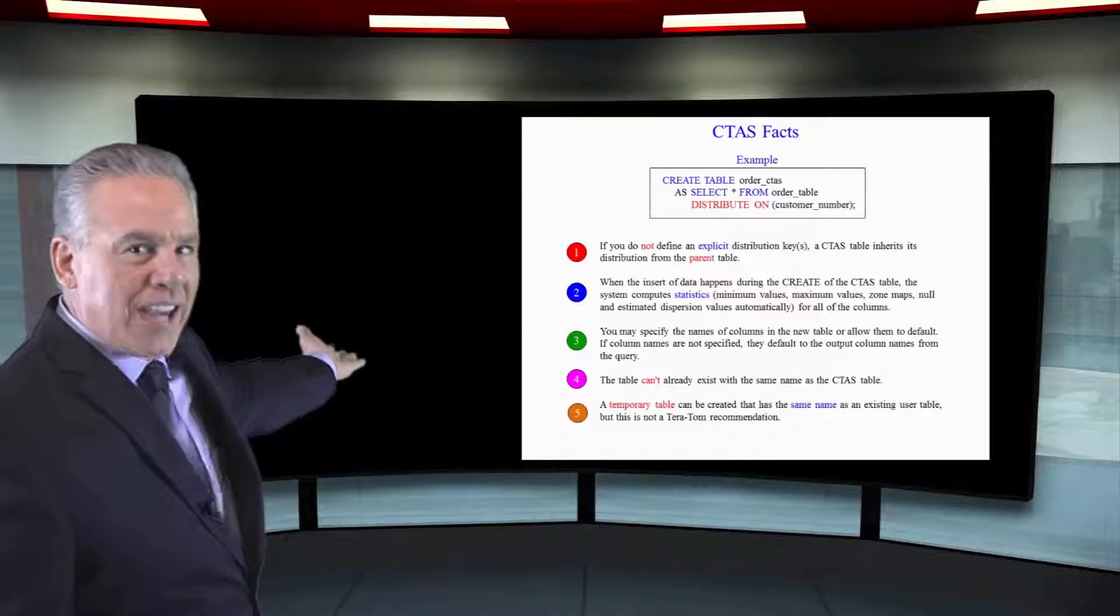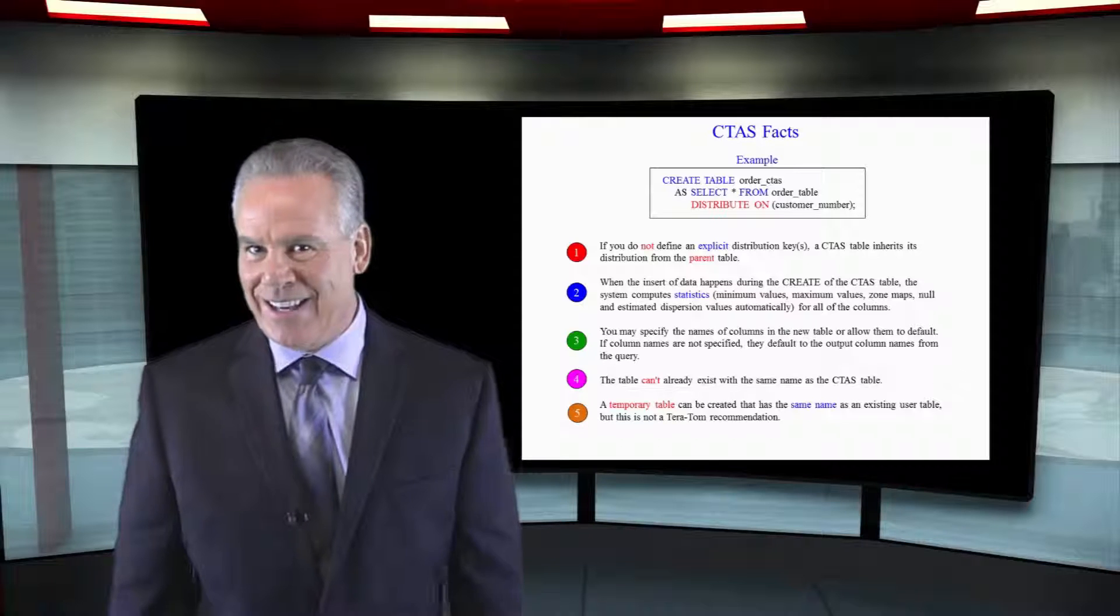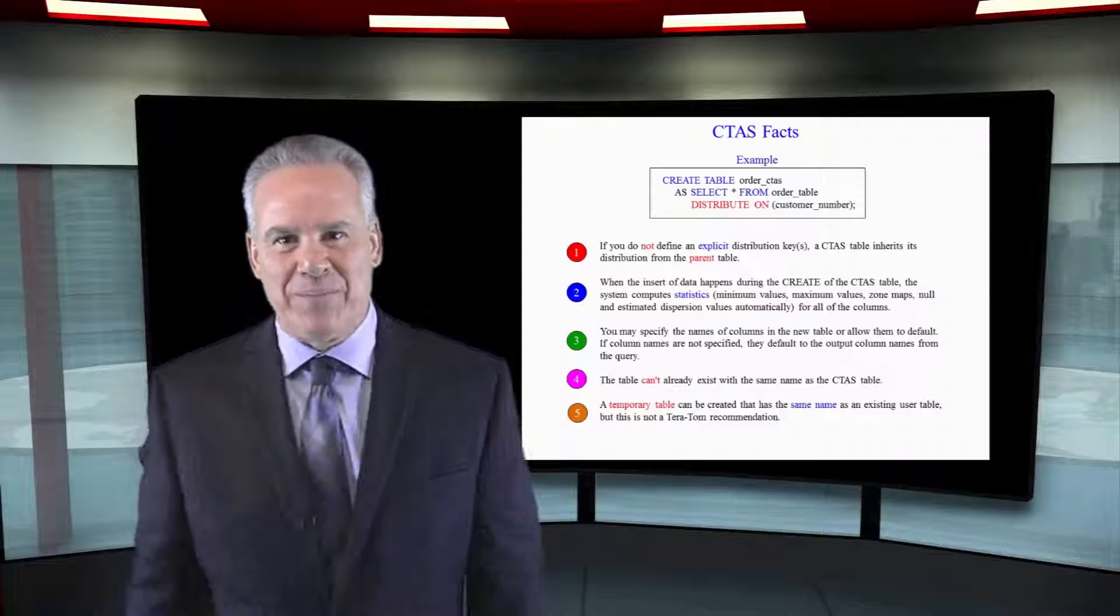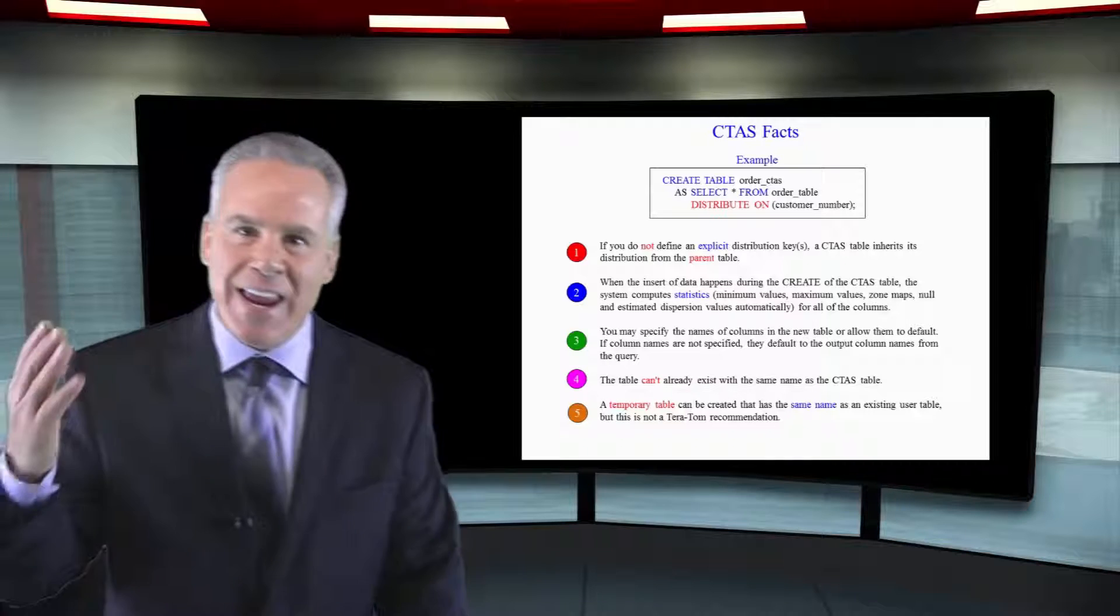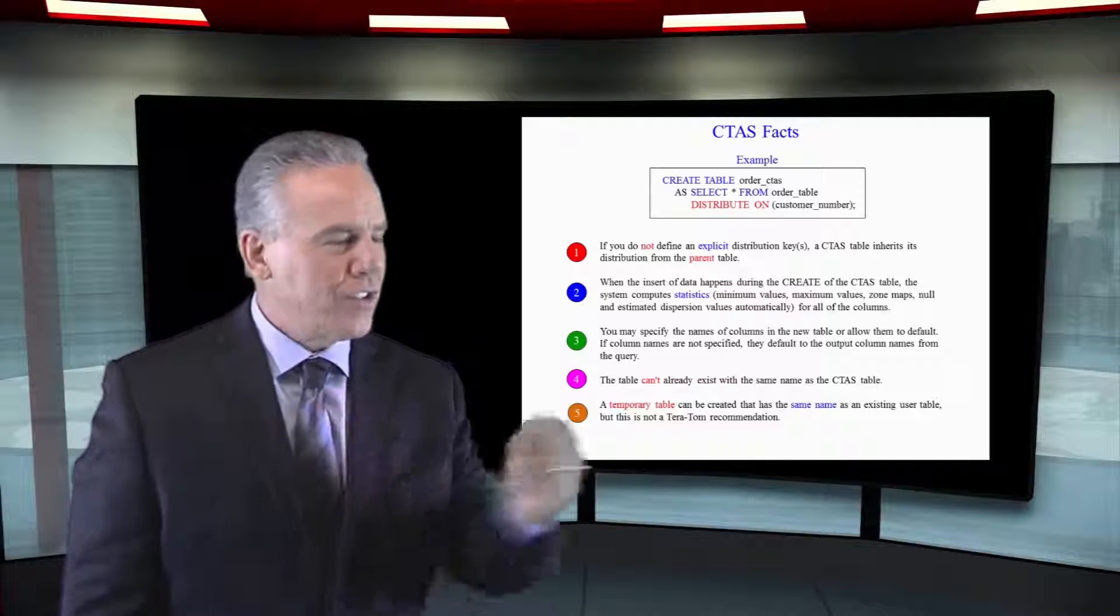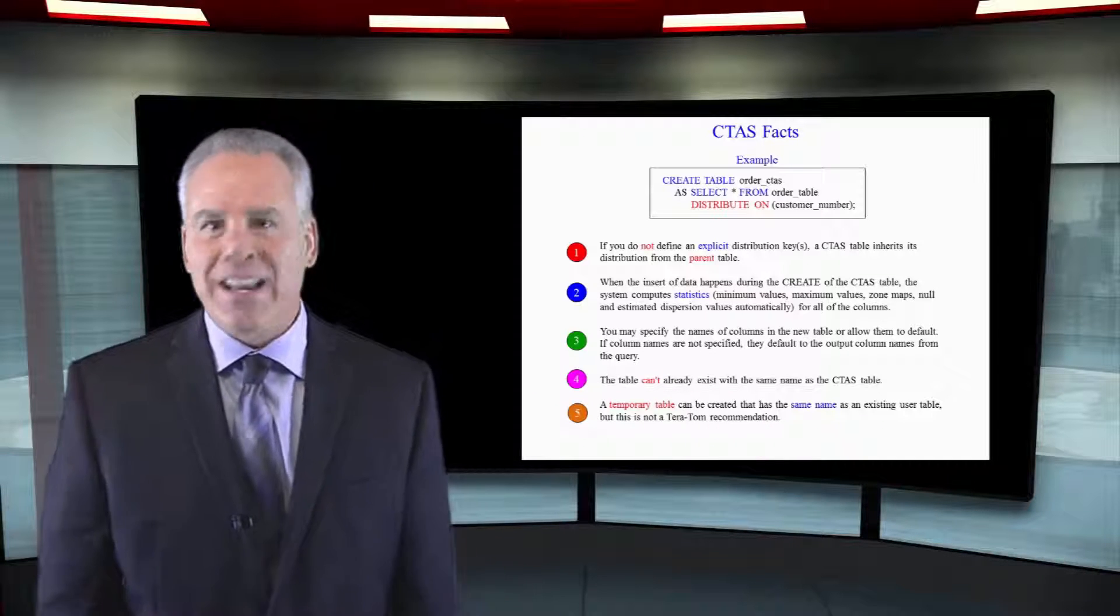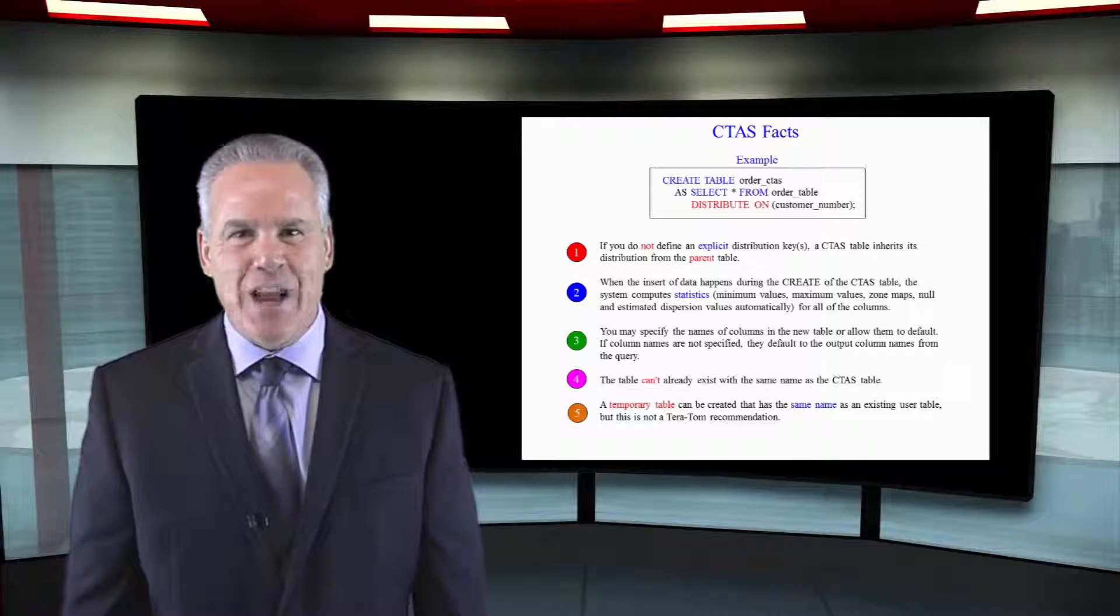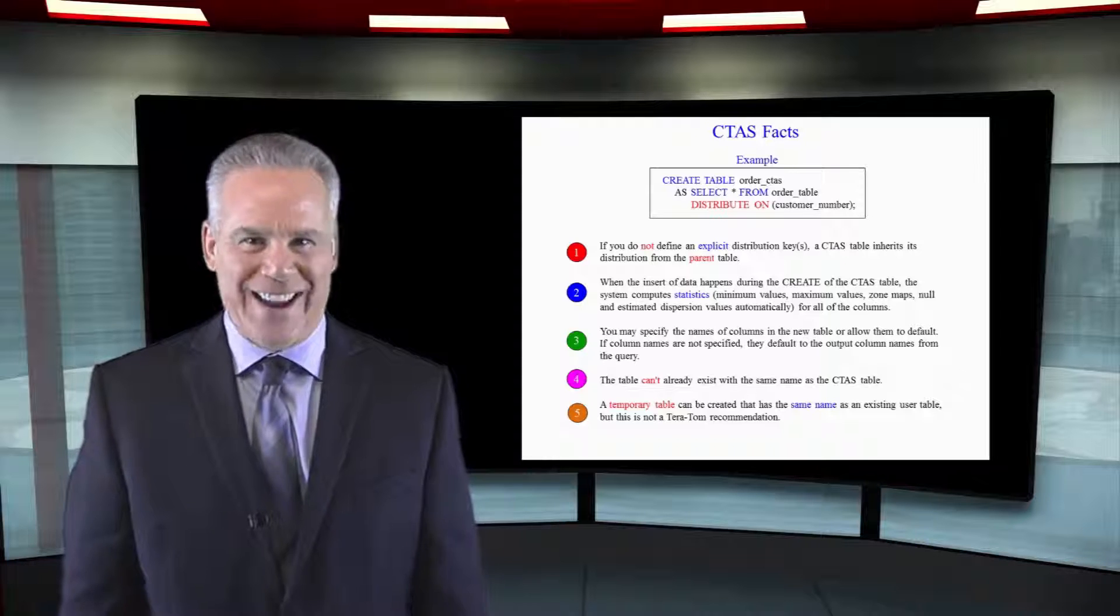Thirdly, you may actually specify the names of the columns of the CTOS, or it'll just inherit it from the table that you're pulling it from. Fourth, the table can't already exist with the same name as the CTOS table, unless, lastly, a temporary table can have the same name as a normal user table, but this is not a Teradata recommendation. Follow those rules, and you've got your CTOS fundamentals down.